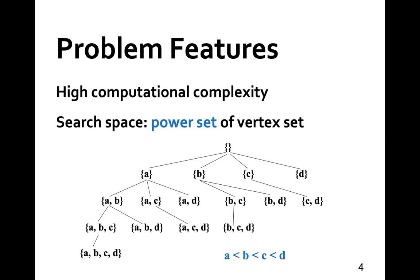For example, this applies to our clique-finding problem. To avoid redundancy, we only add new vertices into the set if their IDs are larger than those vertices already in the set. For example, to get ABD, we do not grow BD by A, but rather grow AB by D.